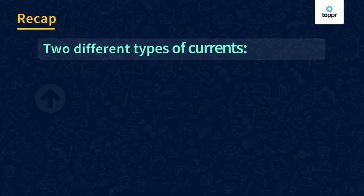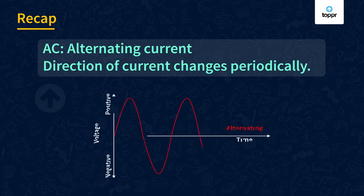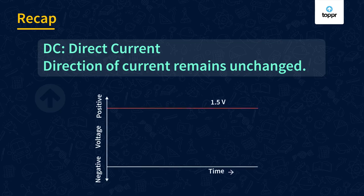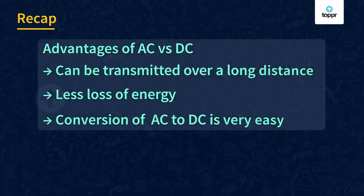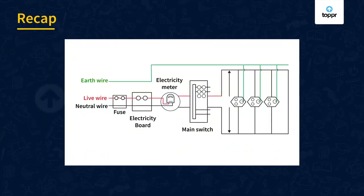Let's quickly recap what we have learned. We learned the two different types of currents: AC and DC. AC stands for alternating current where the direction of current changes periodically; DC stands for direct current which means the current always flows in one direction. We have seen the advantages of AC over DC, and we have also seen the circuit diagram for a residential home and its advantages.